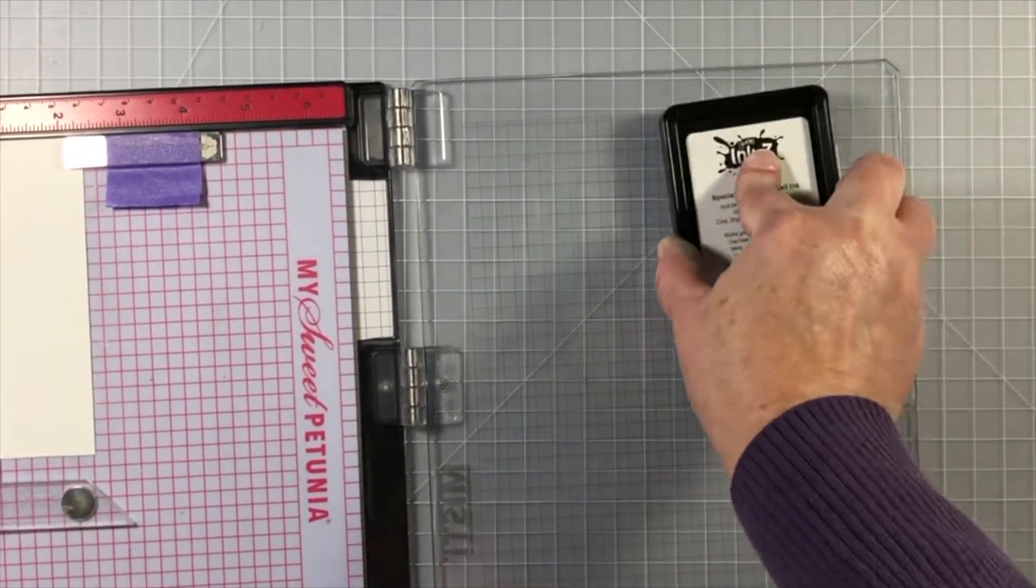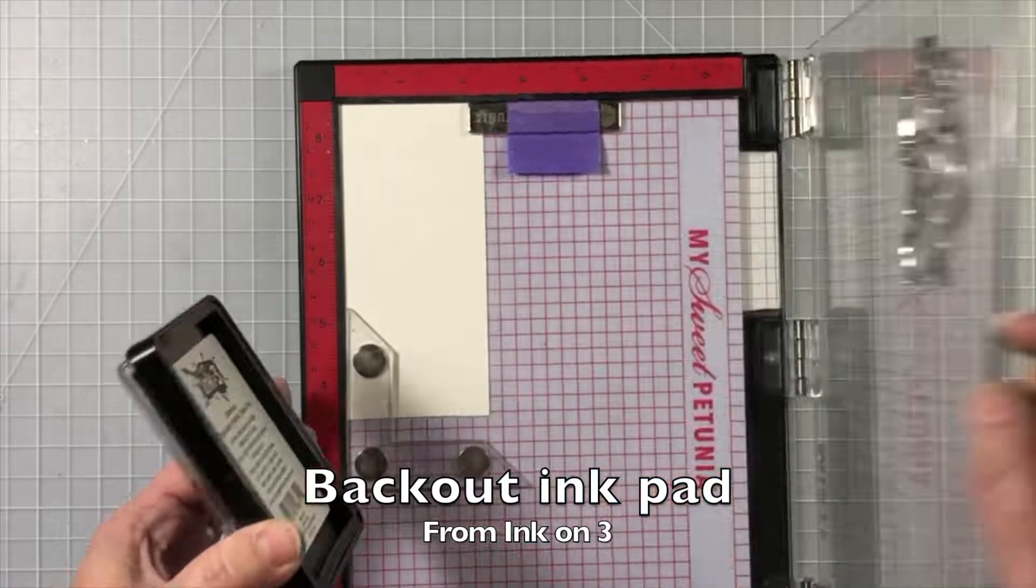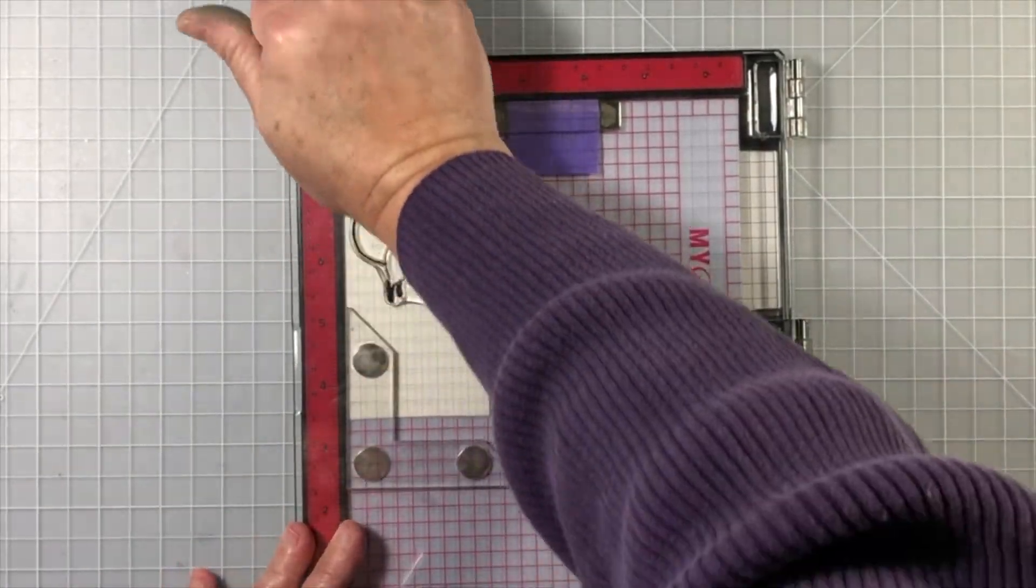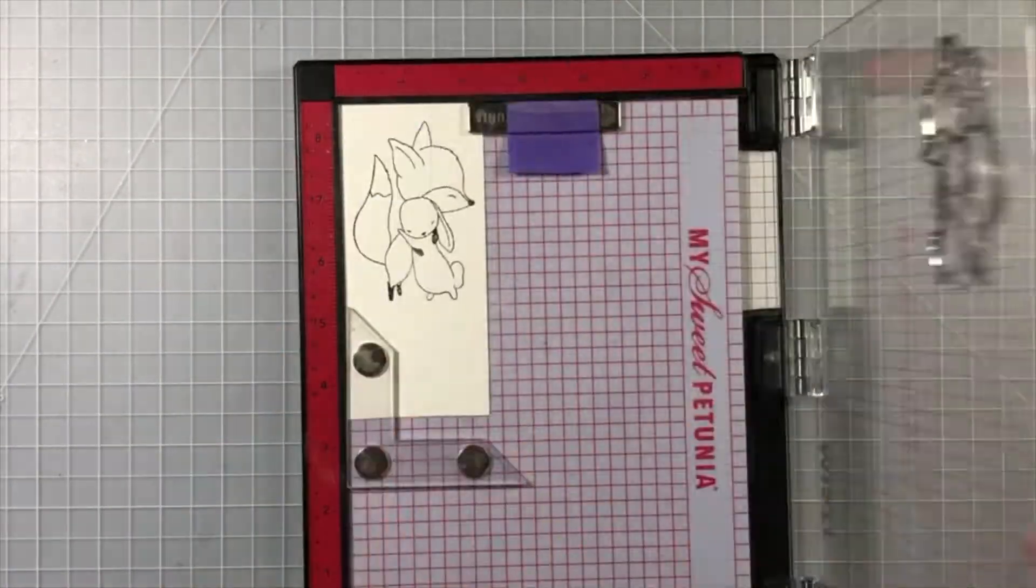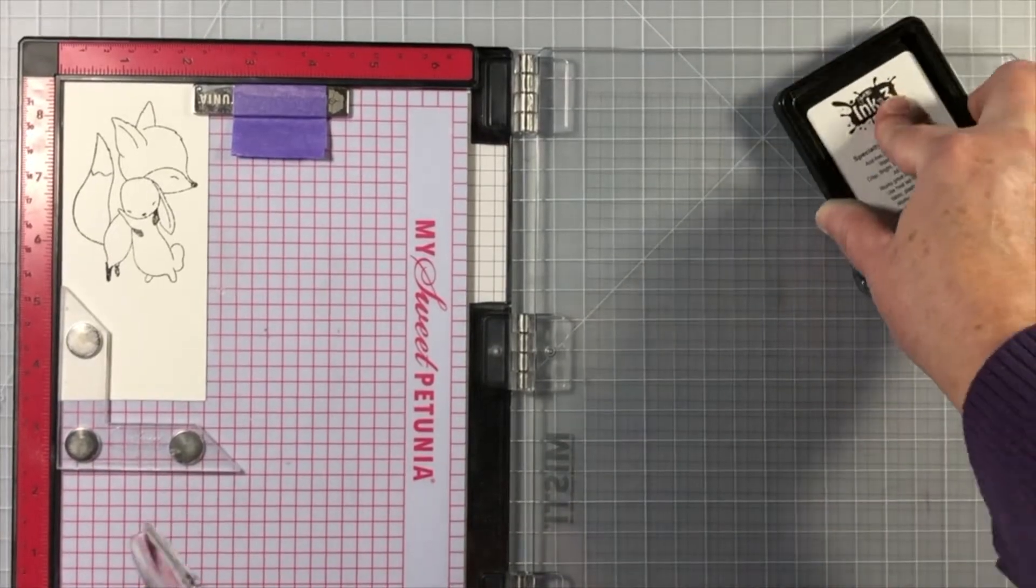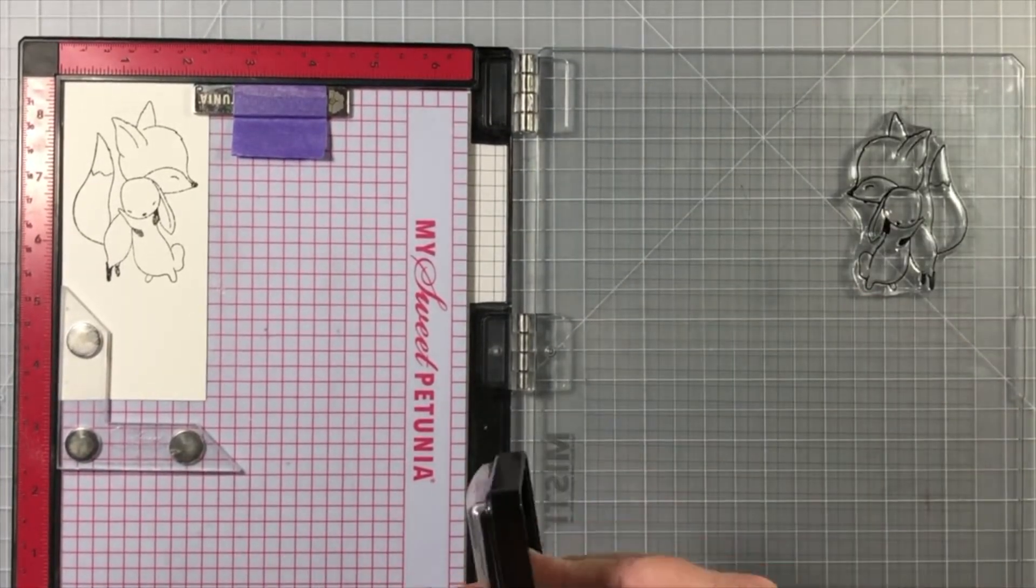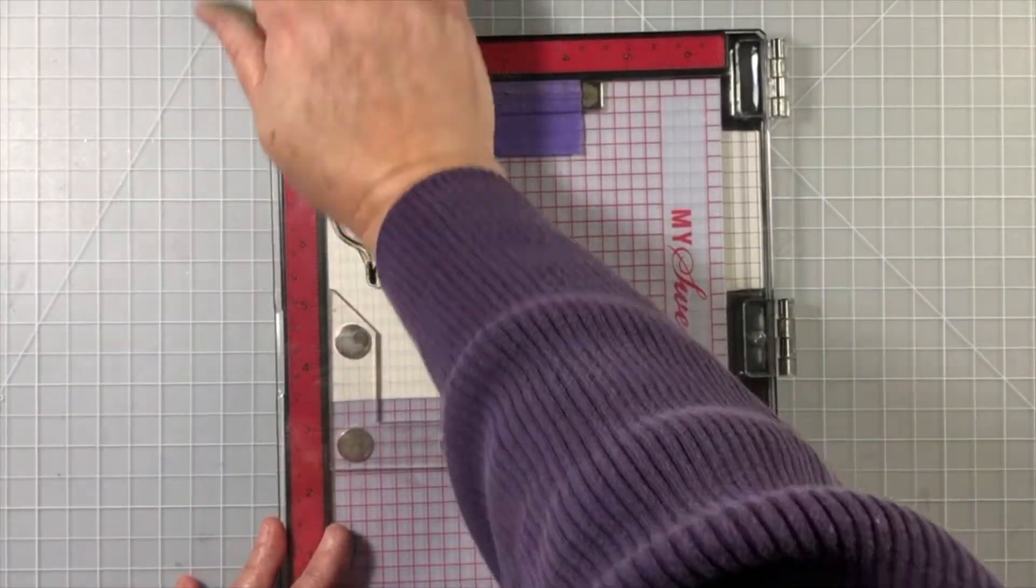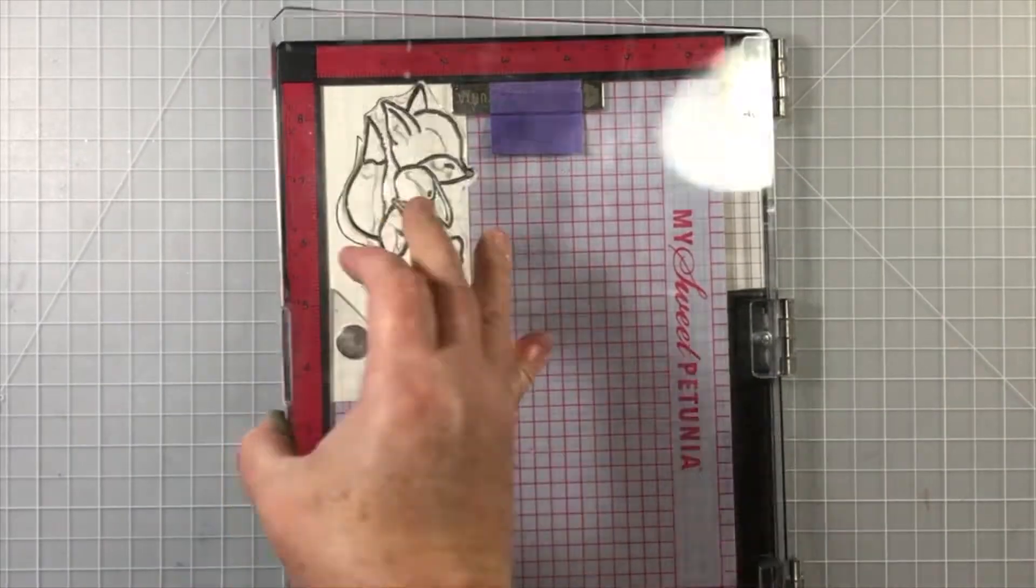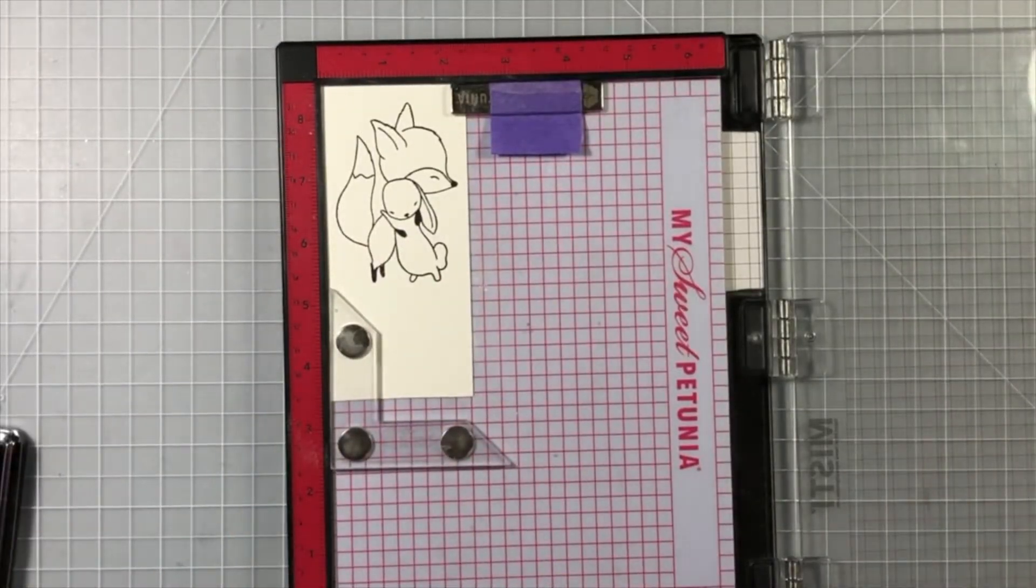The reason I thought about that was I kept looking at my sentiment and the stamp and I thought, you know, it would be really cool if I could make it feel like someone was getting a hug because the sentiment is going to be sending hugs. So that was the idea behind making the sentiment work this way.